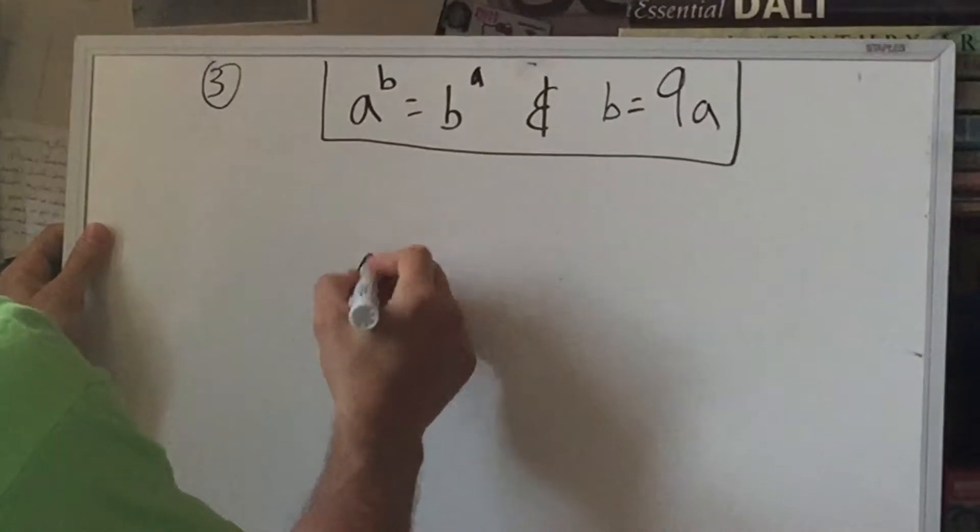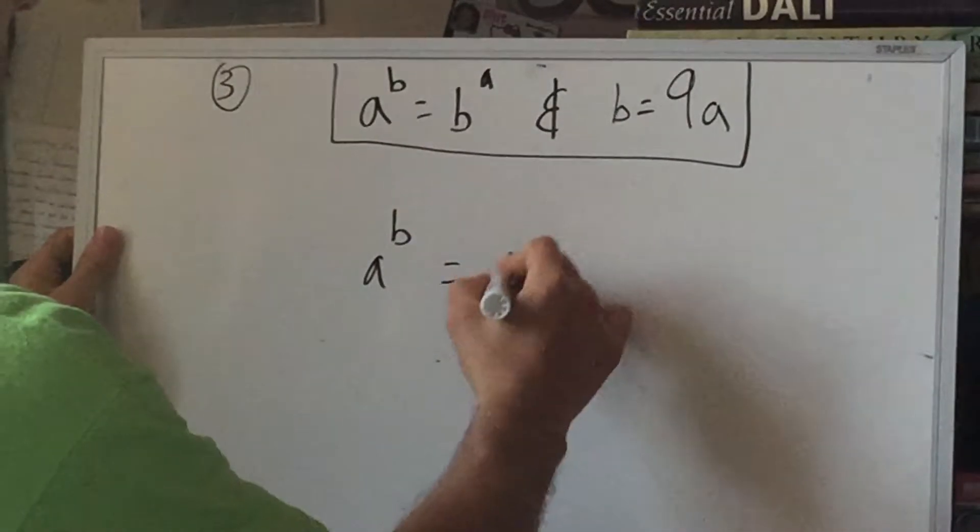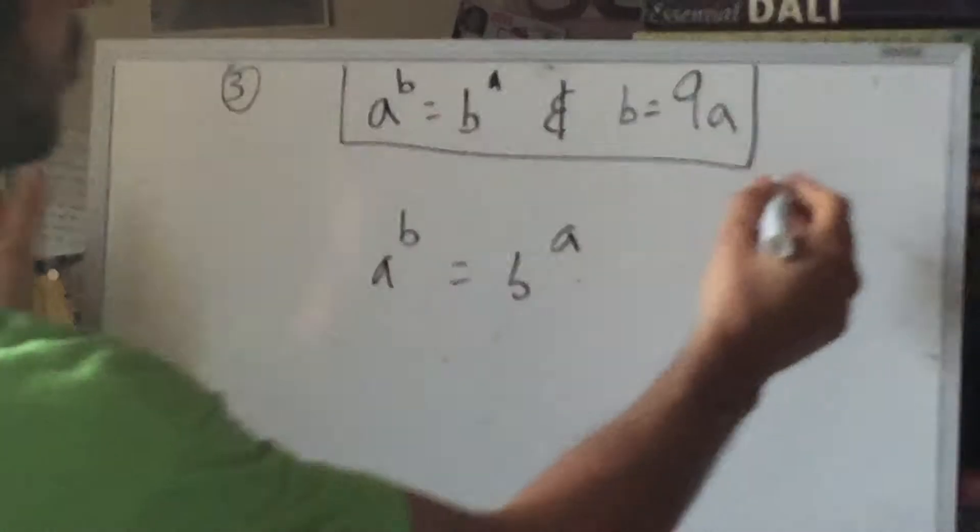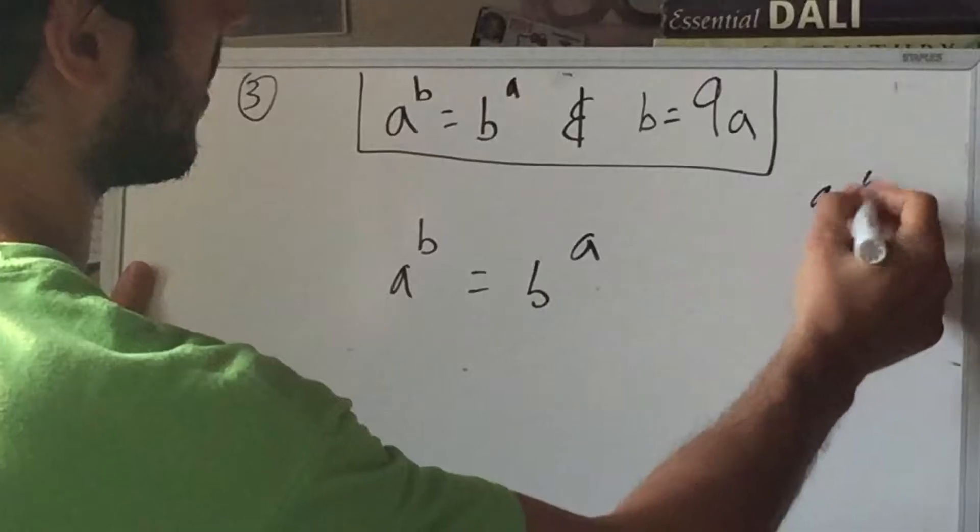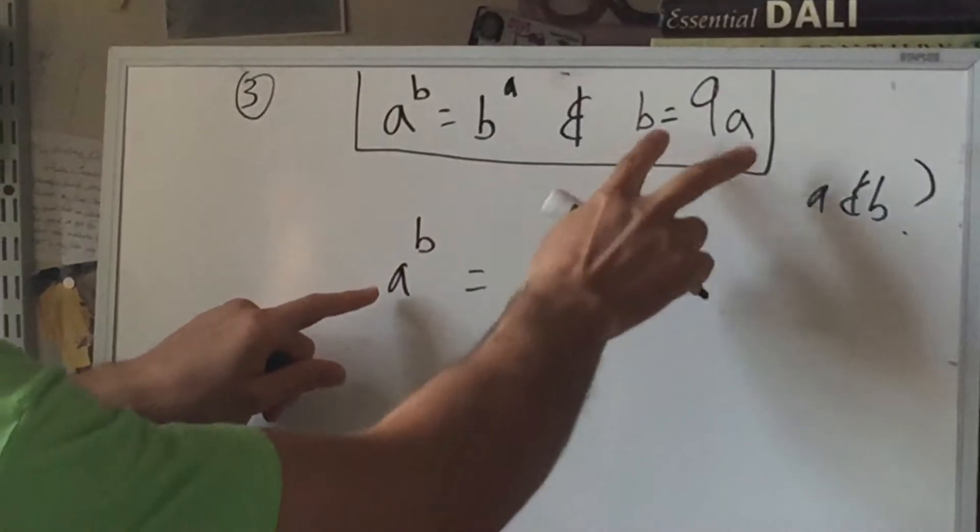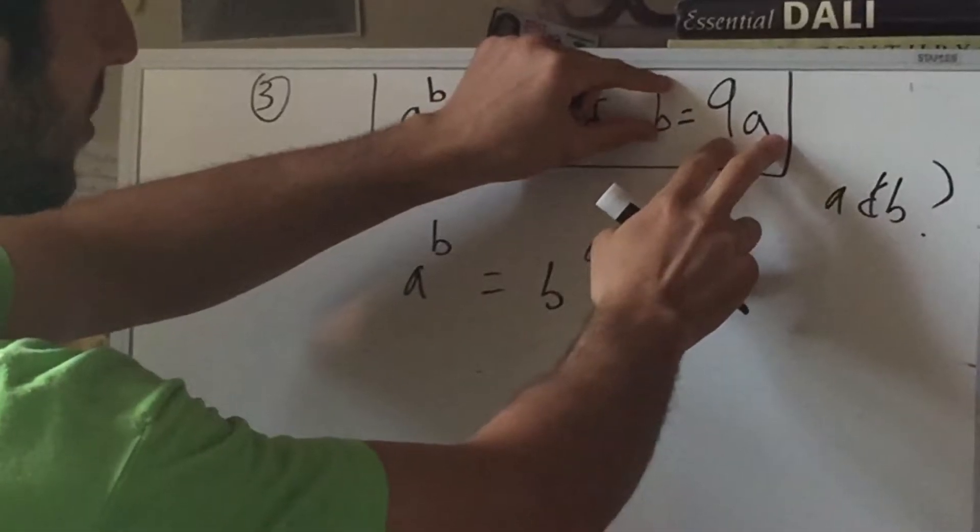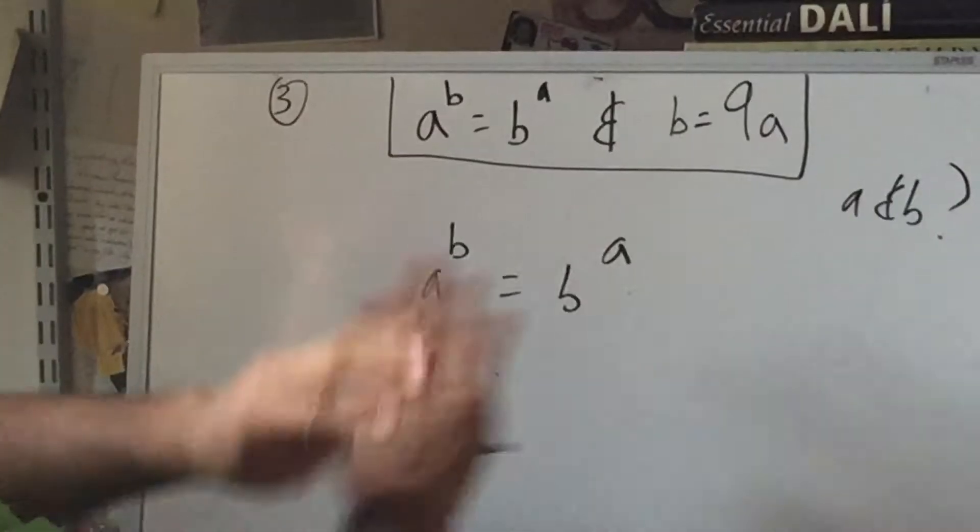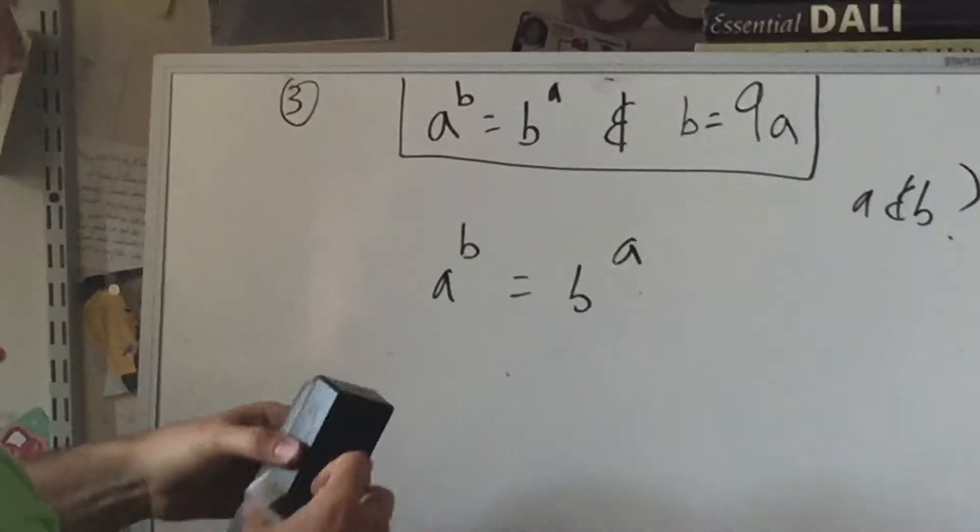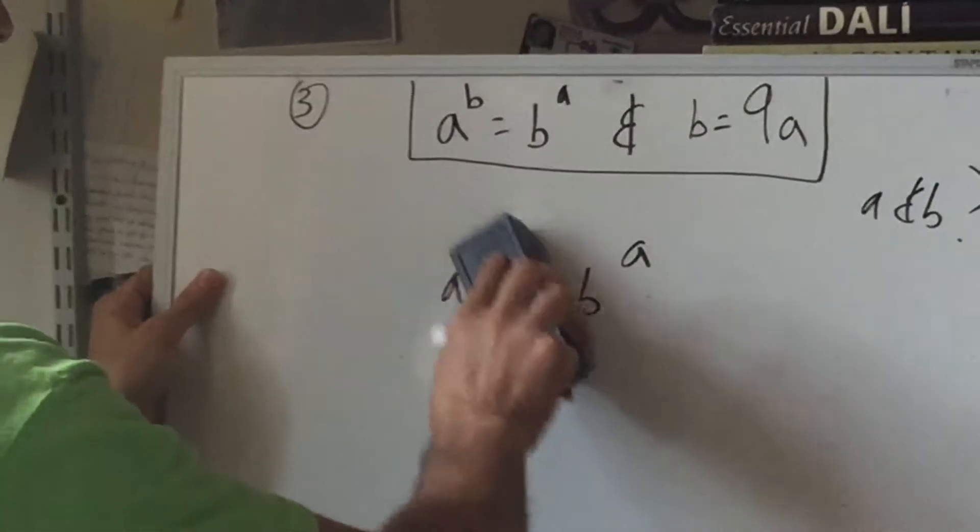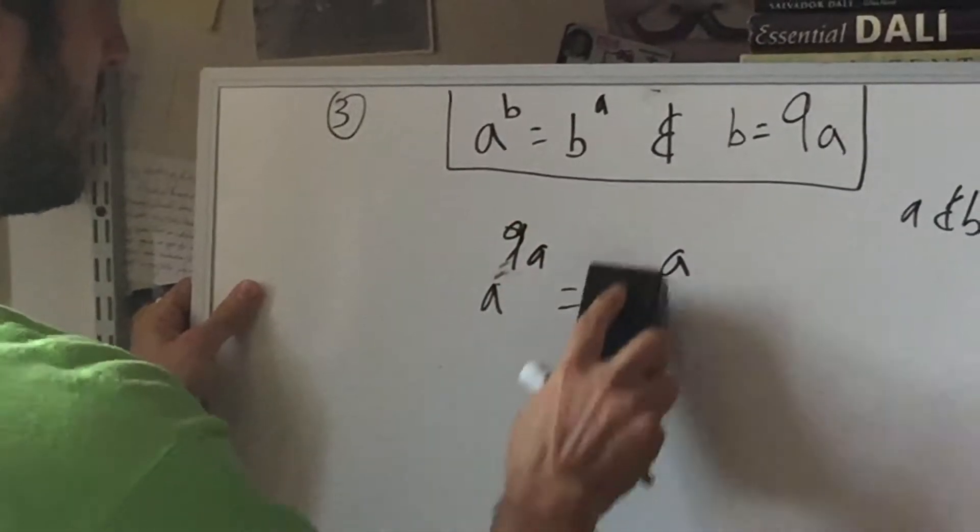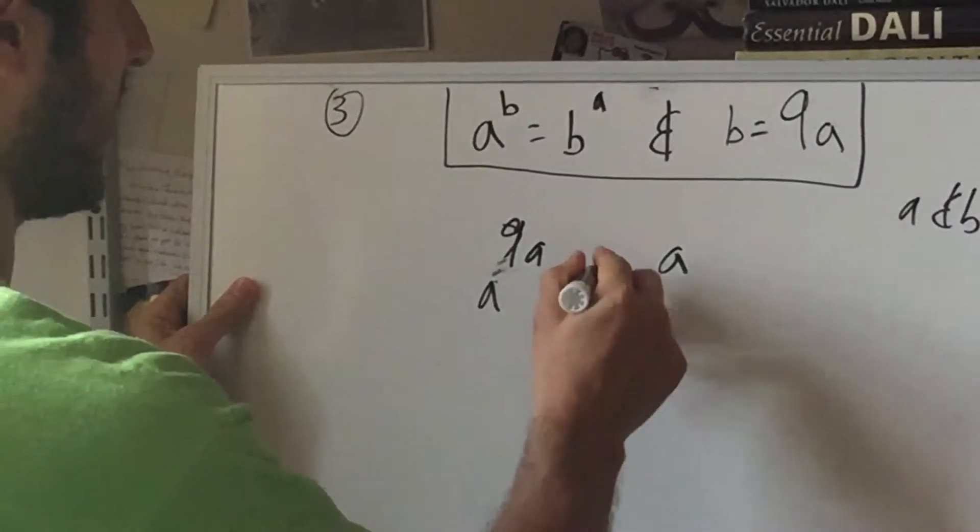Alright, so we have A to the B is equal to B to the A. Except now, the question is what are A and B? So we're going to use this and substitute this for B. So we don't want to see any B's. Anytime we see a B, we're going to replace it with 9A. So a B pops up here and here. So that's 9A. Whoops. And that's a 9A.